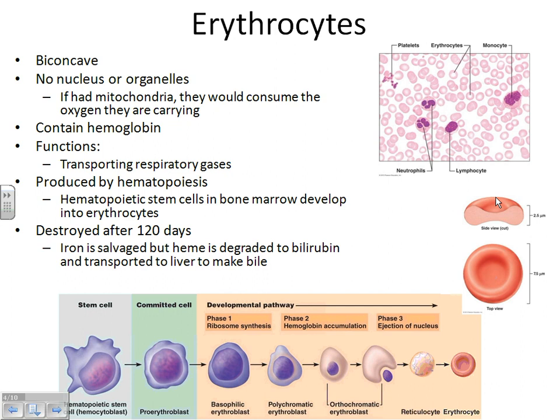Red blood cells are the only eukaryotic cell on Earth that does not have a nucleus. They are basically just shells with hemoglobin on the inside of them. They don't have organelles either. If a red blood cell had mitochondria, it would use the oxygen it was trying to carry to other places. So it just doesn't make any sense for them to have organelles — that's why they're empty.